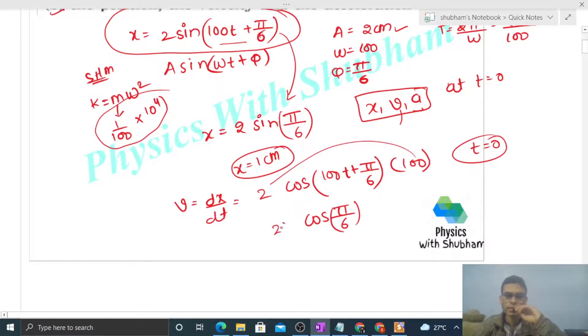This becomes 200 times cos(π/6). What is cos(π/6)? That is √3/2. So v equals 100√3 centimeters per second, or √3 meters per second.